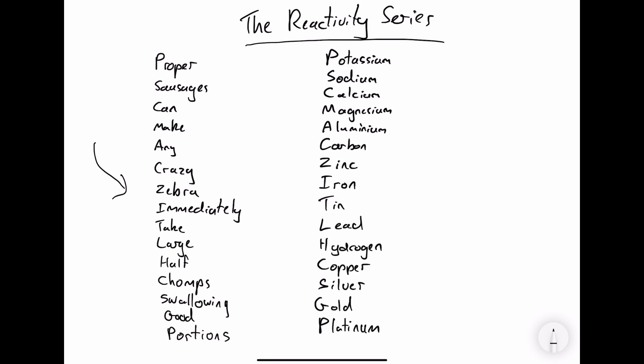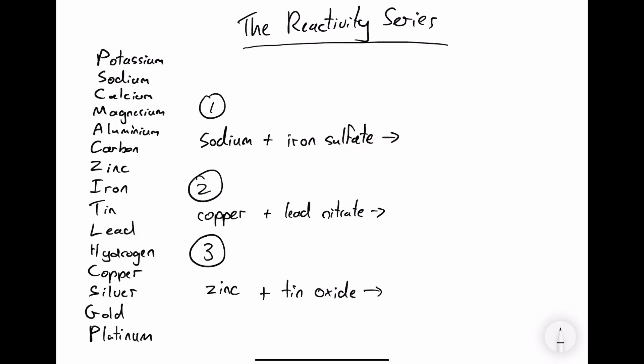The most reactive element in the reactivity series is potassium at the top, and the least reactive is platinum at the bottom. We're going to use the reactivity series to write the products of three reactions.